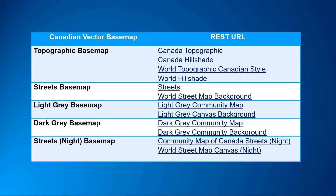This table of REST URLs summarizes the data required for each style of the Canadian vector base map. You can access these links within the corresponding blog post. There are currently five different styles of the Community Map of Canada. In this example, I am going to demonstrate adding the Streets base map to Enterprise, which consists of two REST URLs.